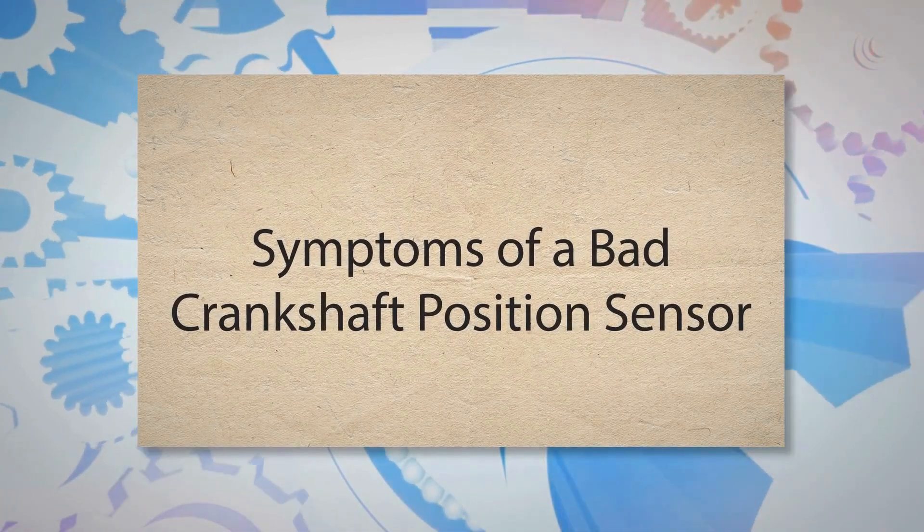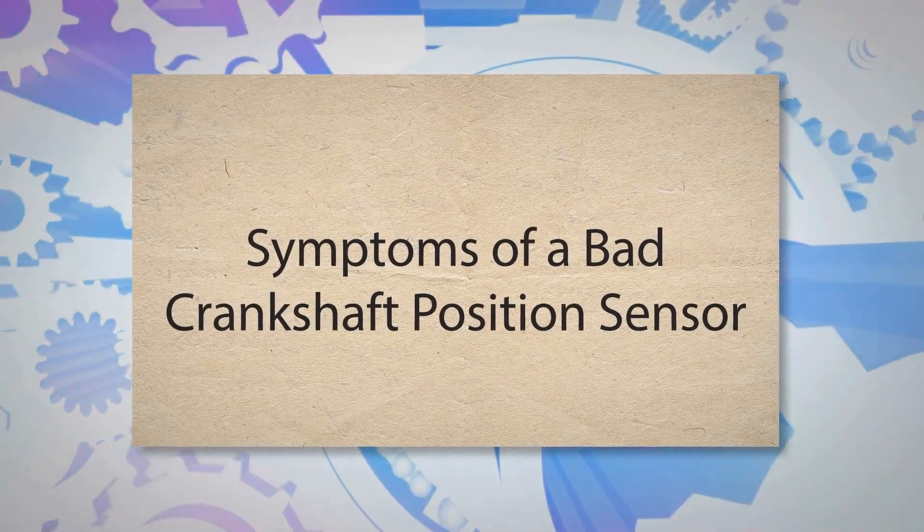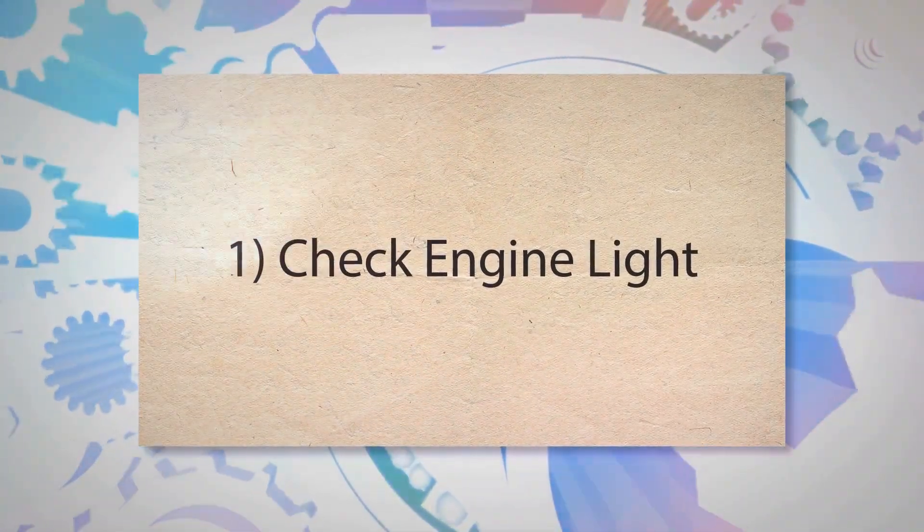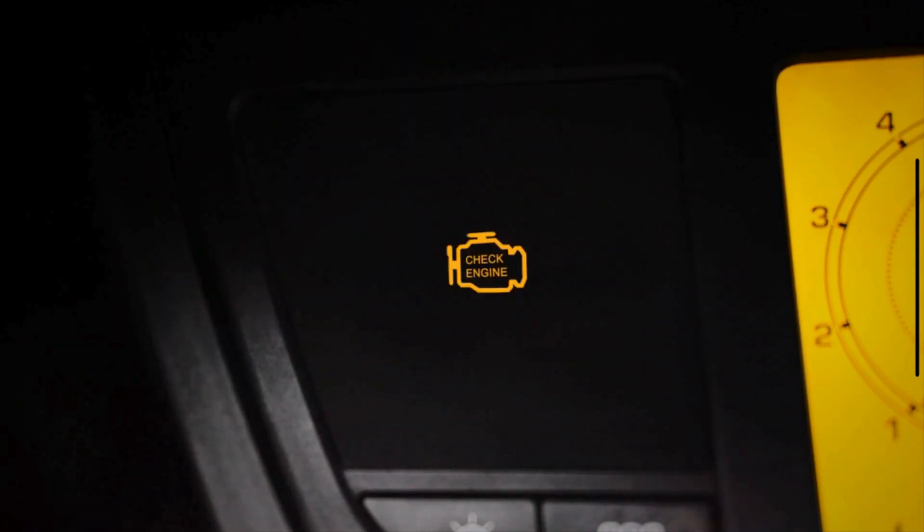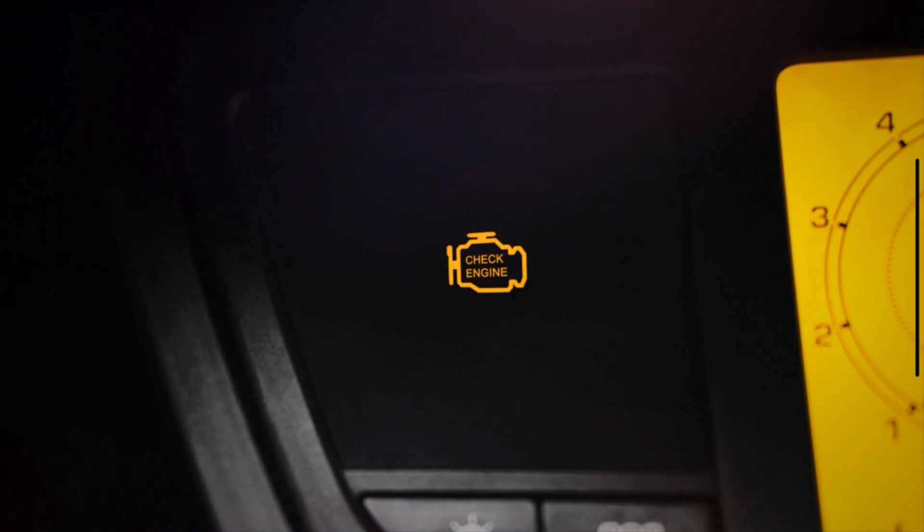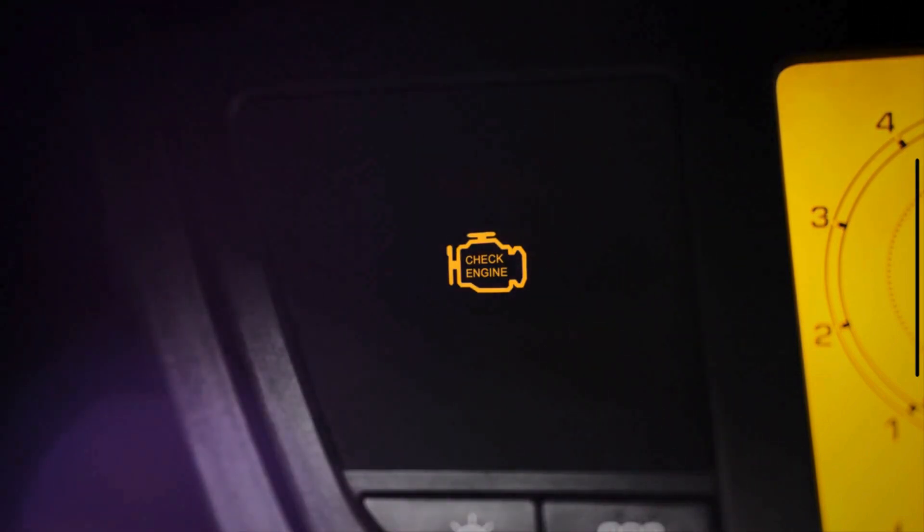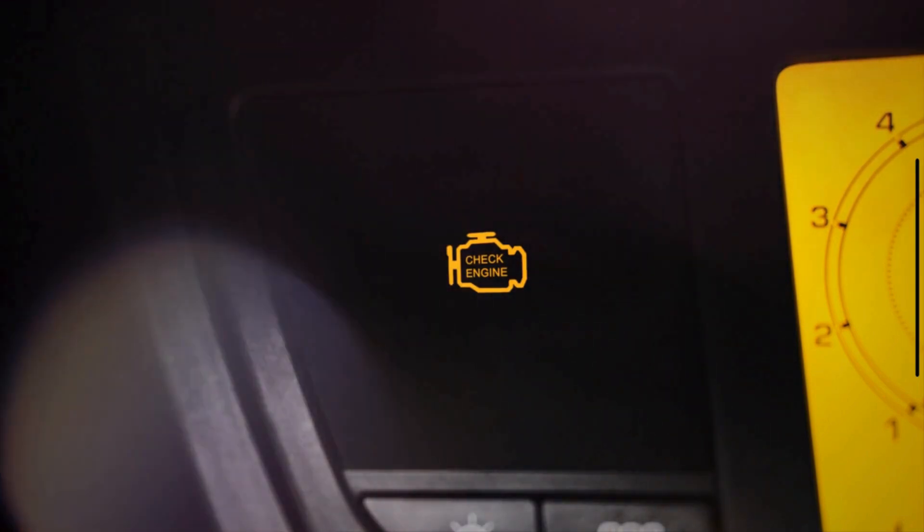Let's understand the symptoms of a bad crankshaft position sensor. 1. Check engine light. The crankshaft position sensor sends information about the position and rotational speed of the crankshaft to the engine control module. If the sensor fails, it sends incorrect or no data, triggering the ECM to turn on the check engine light as a warning.